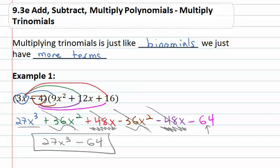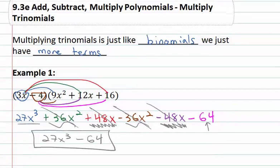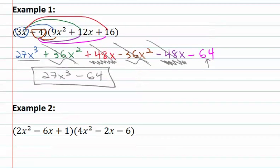This one's going to be particularly interesting to us in the factoring unit when all those terms in the middle subtracted out and we were just left with the binomial. But for now we'll just keep practicing with multiplying by distributing. Let's take a look at our second example.